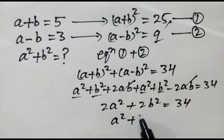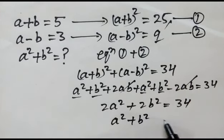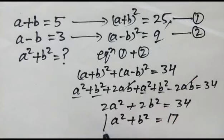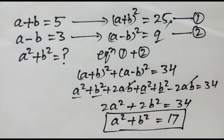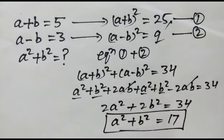So a² + b² is equal to 17. Okay friends, thank you.